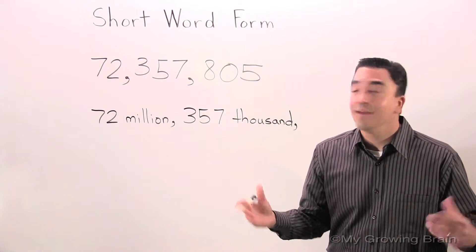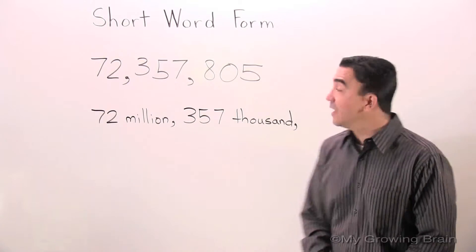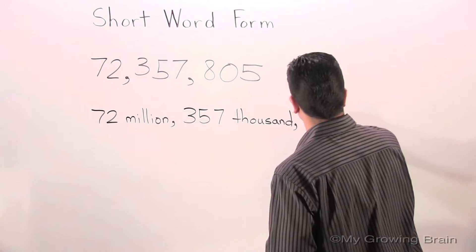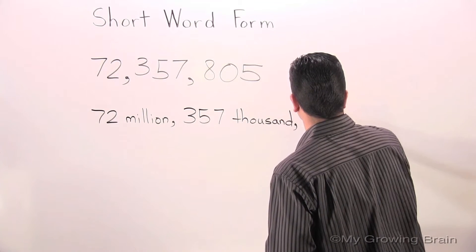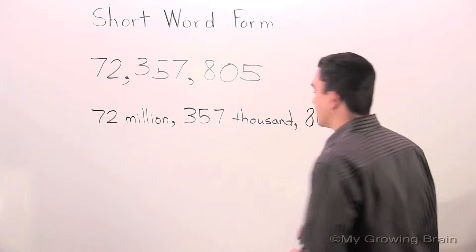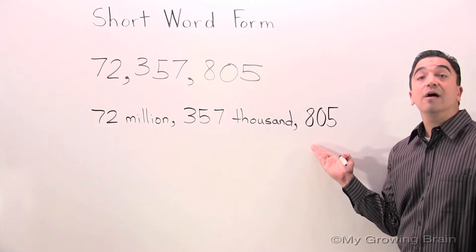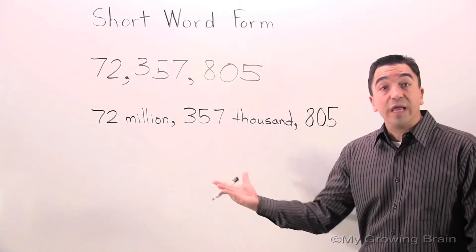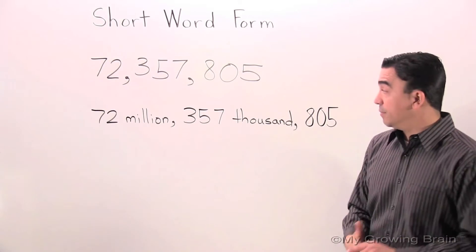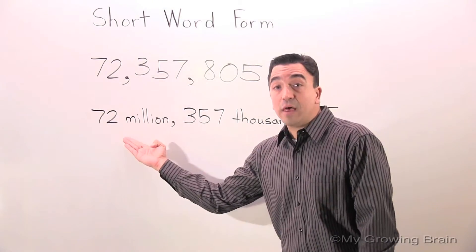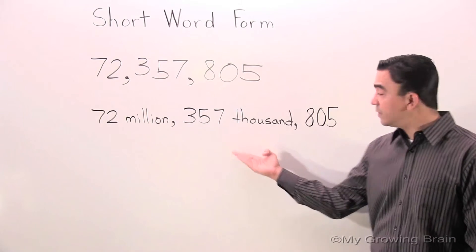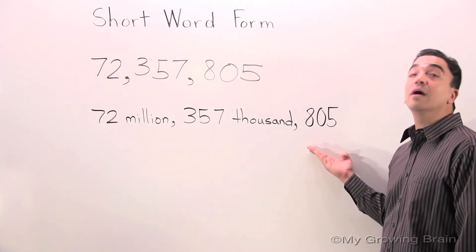Let's move on to the ones period. 805. 805. Now, let's read this in short word form: 72 million, 357 thousand, 805.